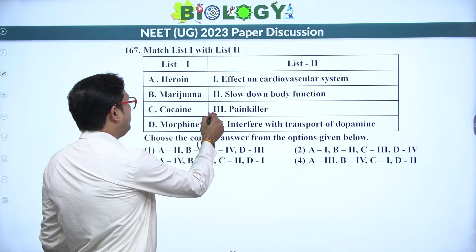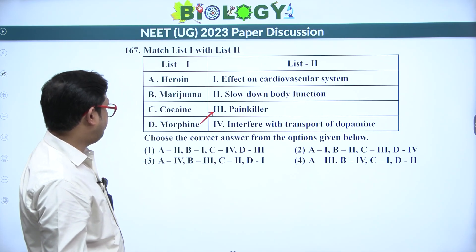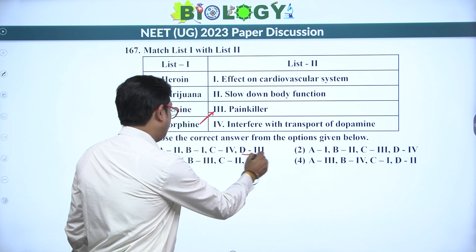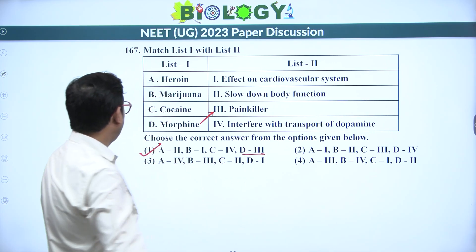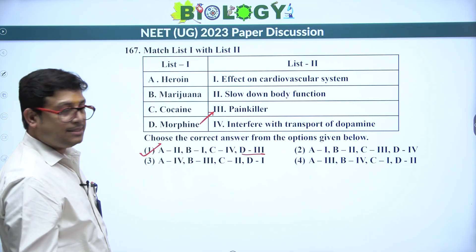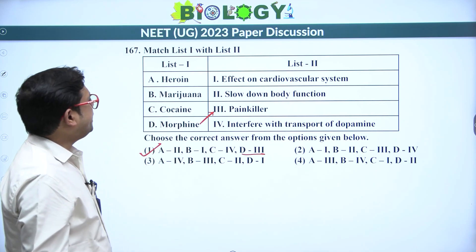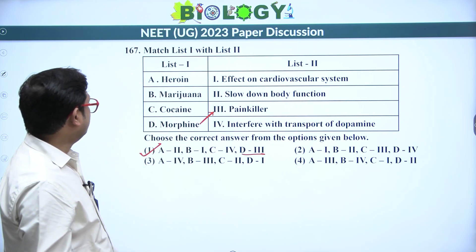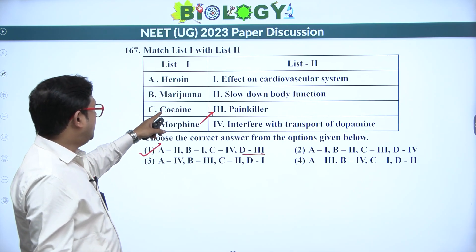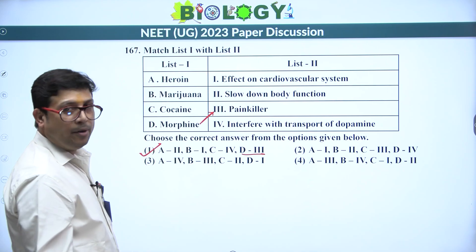Next: match drugs to their effects. Morphine is an opioid and potent painkiller — D is 3. Heroin slows down body functions — it is a sedative. Marijuana affects the cardiovascular system — it is a cannabinoid. Cocaine interferes with the transport of dopamine.